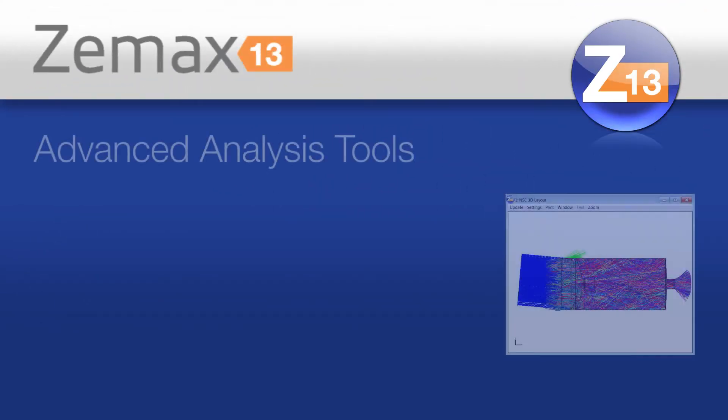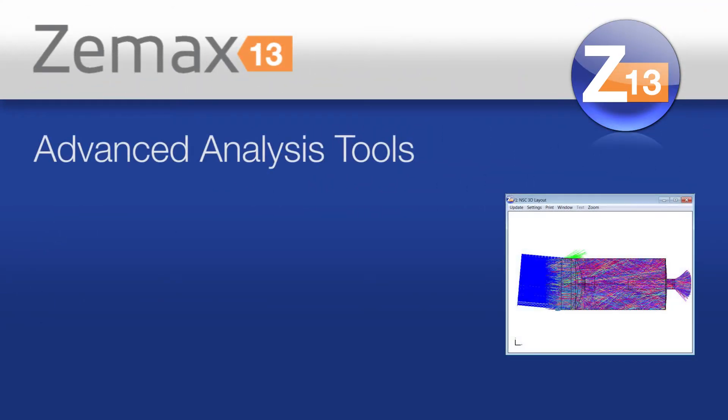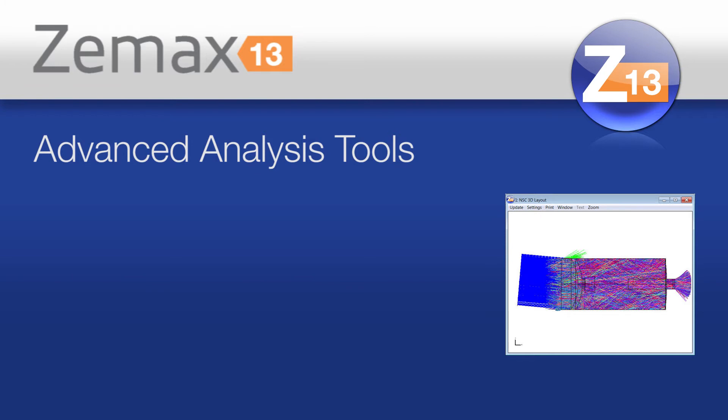Then, once you want to analyze your system, there's no guessing — because we have every kind of analysis tool you might want built right into the code. One example is our advanced path analysis tool, which you can use to look at the number of different types of paths through an optical system.